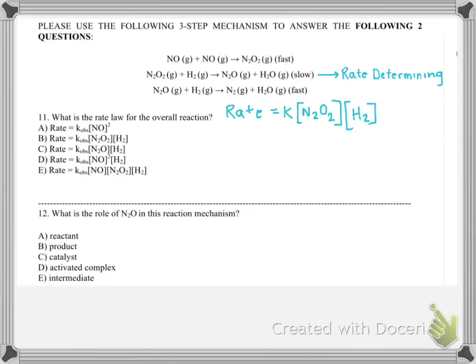That seems fine, but we can't leave this intermediate in our rate law. We want to write it in terms of things that are actually in our reaction. This doesn't show up in the overall reaction, so we don't want to include it.